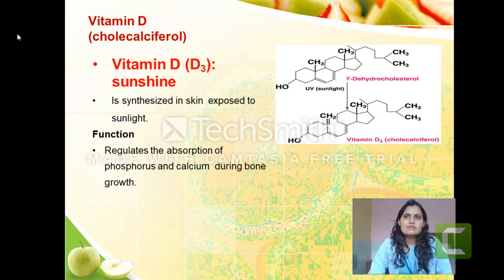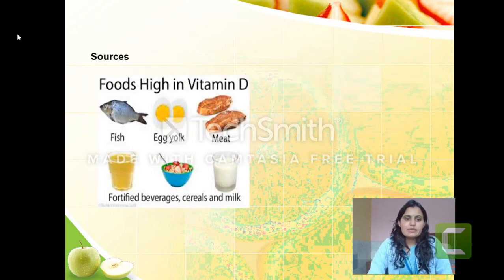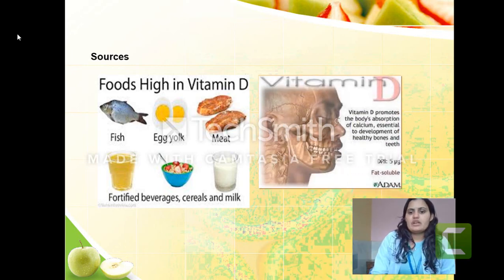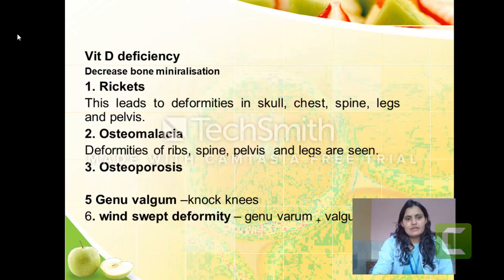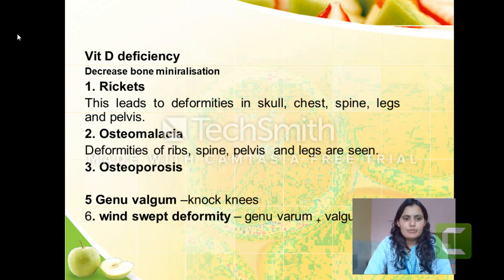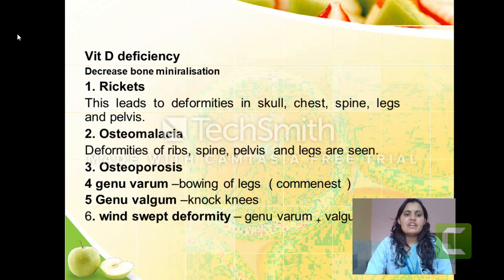The rich food sources of vitamin D are mainly dairy products, fish, eggs, meat, and fortified beverages and cereals. Vitamin D is important for our bones, teeth, and many parts of the body. If there is a deficiency, it leads to decreased bone mineralization and bone demineralization. This can result in rickets, osteomalacia, osteoporosis, genu varum, genu valgum, and windswept deformity. Rickets is mainly seen in children; osteomalacia in adults; and osteoporosis mainly in menopausal females.